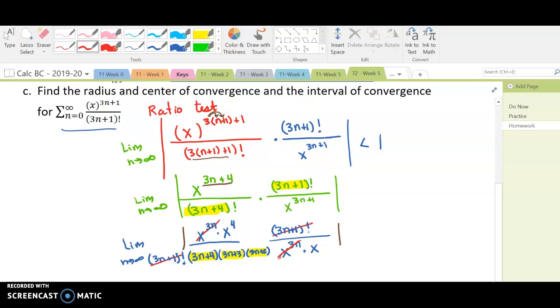Similarly, x to the 3n and x to the 3n are the same. And x to the 4th and x to the 1 simplify to x cubed on top,